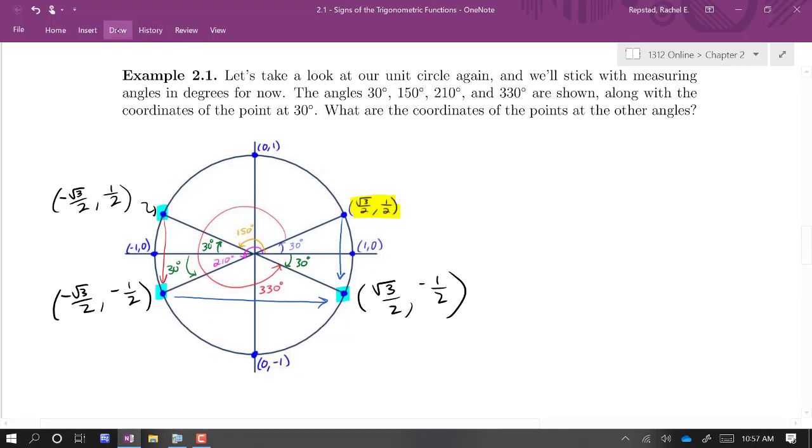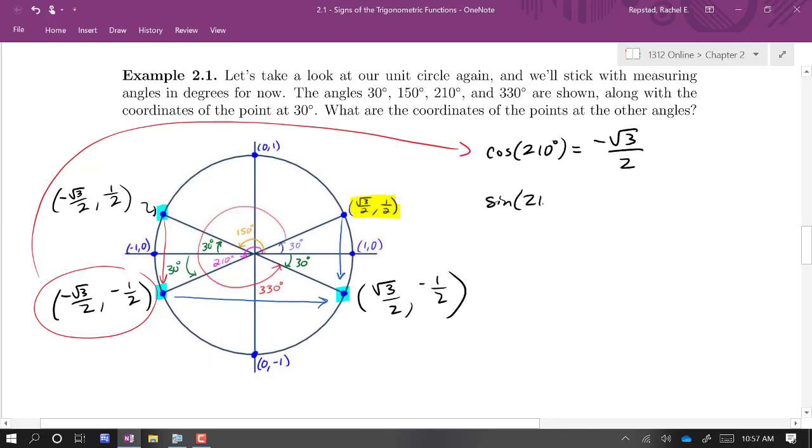Looking at this point right here, that cosine of 210 degrees is negative root 3 over 2, and sine of 210 degrees is negative 1 half, and likewise for these other points.